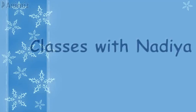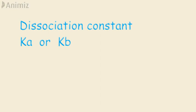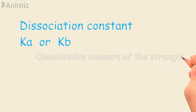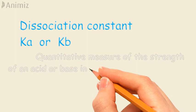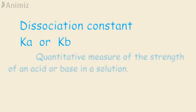Hi, welcome to the Classes with Nadia. This video is about dissociation constant Ka or Kb. The dissociation constant is a quantitative measure of the strength of an acid or base in solution. Whenever we use dissociation constant, we mention pKa values.